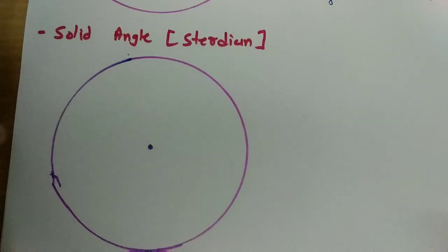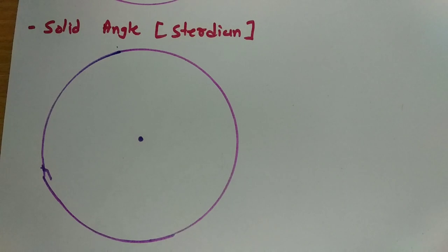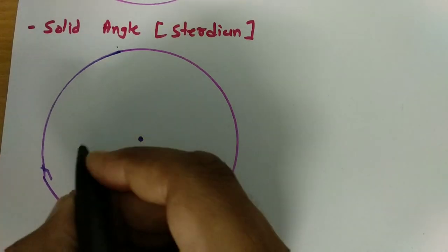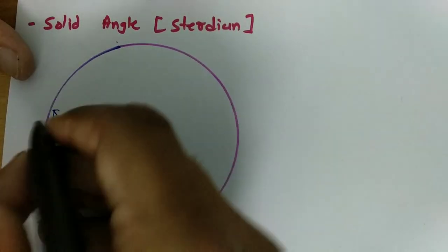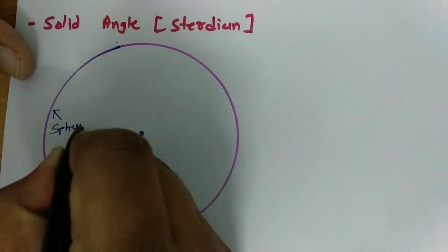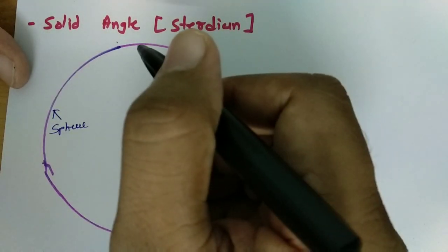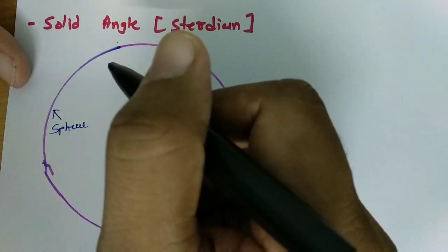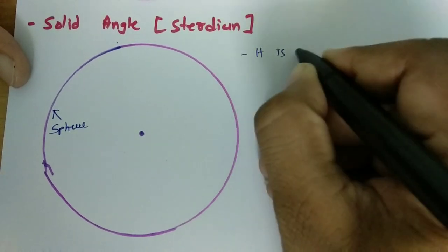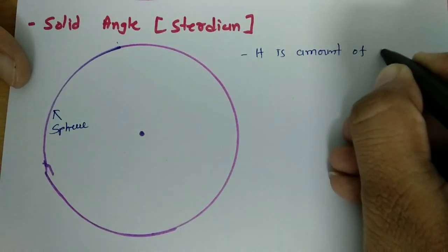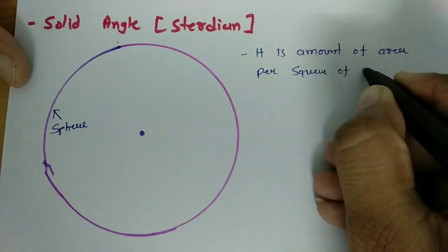Now let us move on to the second part: solid angle. When we talk about solid angle, it has to be measured in three dimensions, so we need to consider a sphere. When we see three-dimensional measurement of angle, we consider a sphere. The solid angle in terms of steradian is the amount of area covered per square of radius. The definition: it is the amount of area per square of radius.